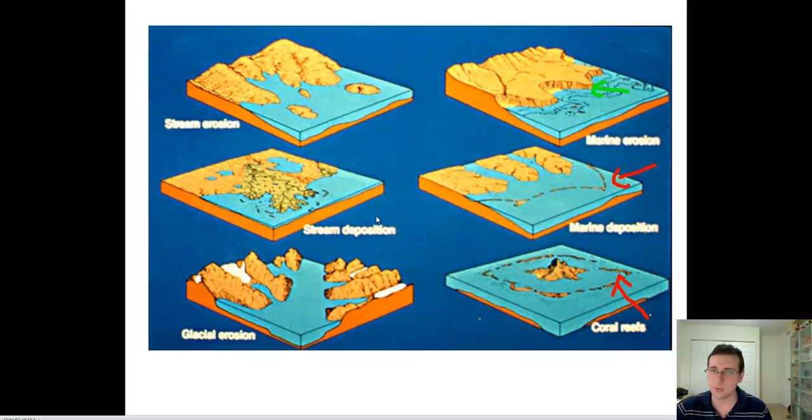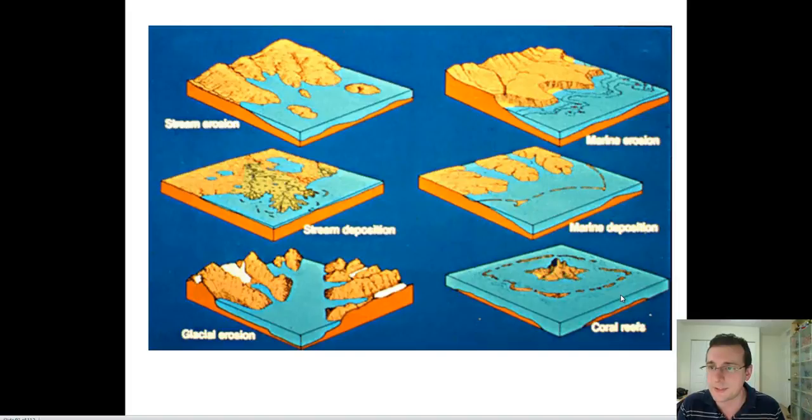We talked about how rivers erode the land. We talked about how rivers deposit sediments. We talked about glaciers can do the same. We talked about marine erosion and marine deposition. We also talked about coral reefs. So now you have a general picture about how different shorelines can look depending on what kind of setup is happening.